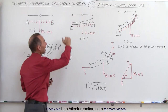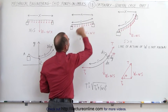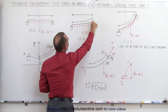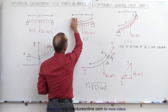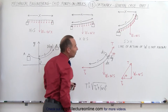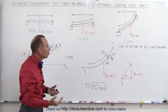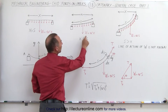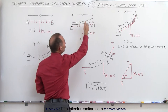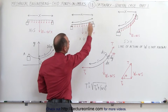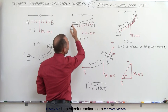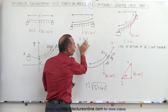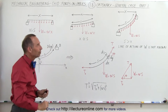Even when there's a slight sag to the cable, where the arc length s is slightly longer than the distance x between the two supports, we can still assume that's close enough — we can say the force is equally distributed and the total weight equals the weight per unit length times x, even though x and s are not quite the same.